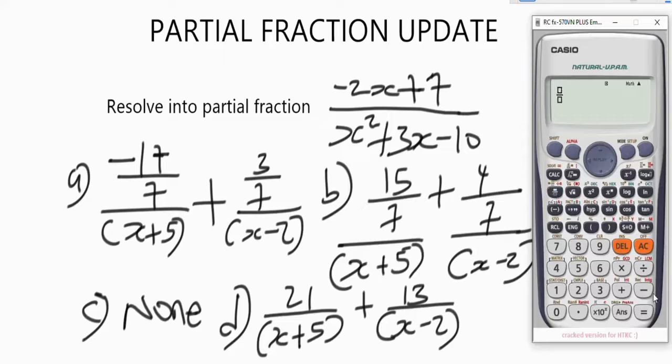So let's use this one to simplify this question. So we have minus two x plus seven over x square plus three x minus ten.